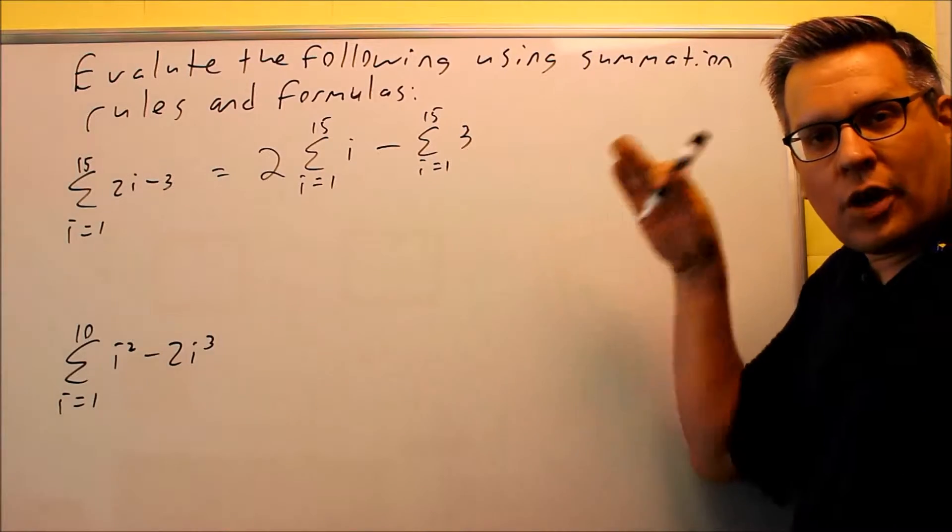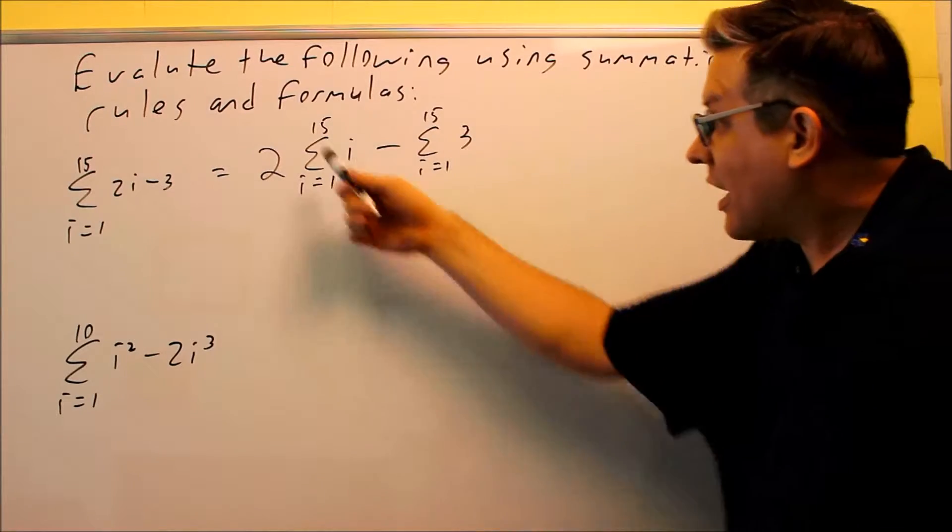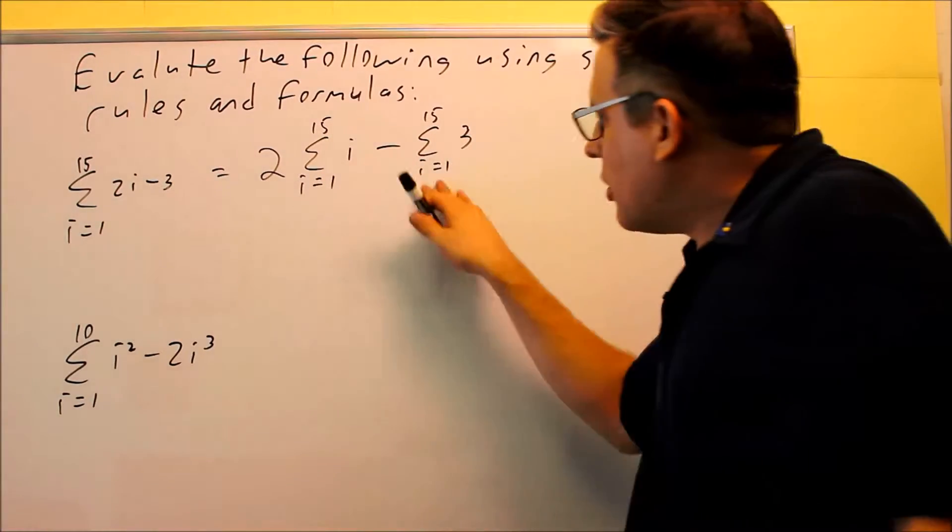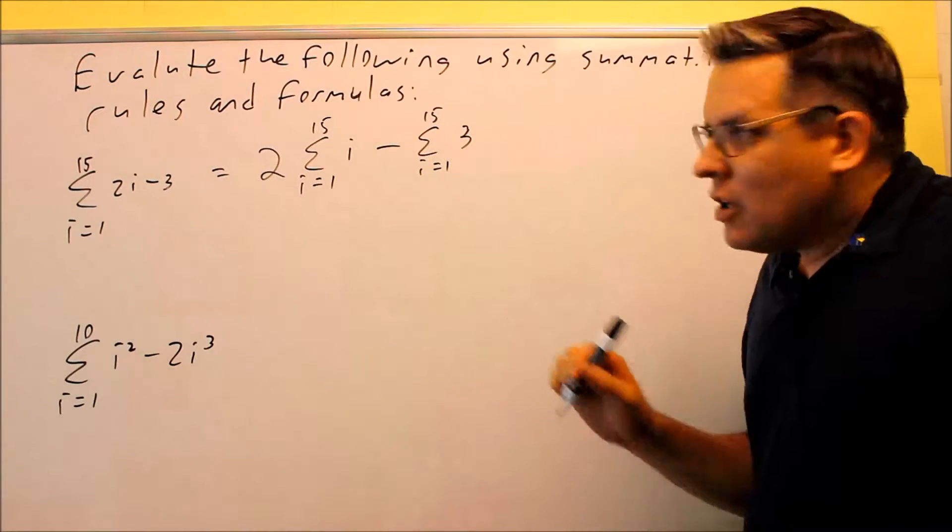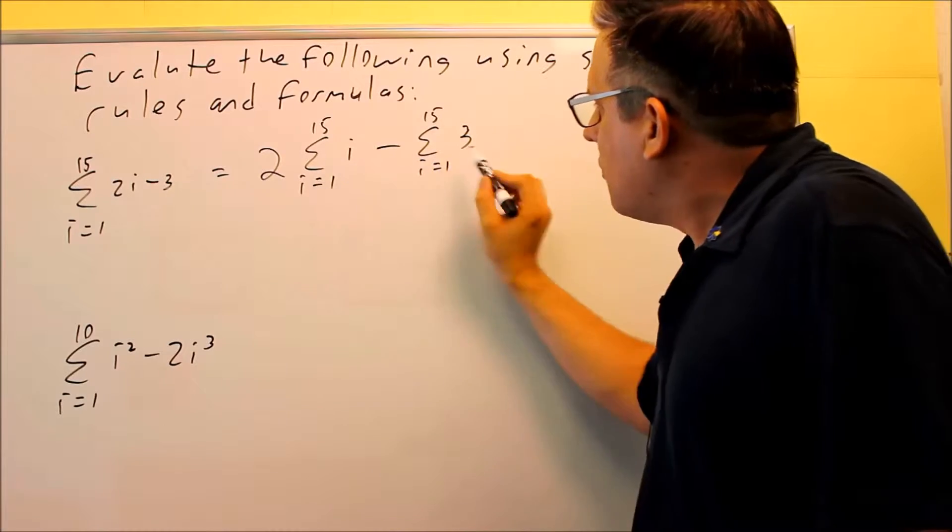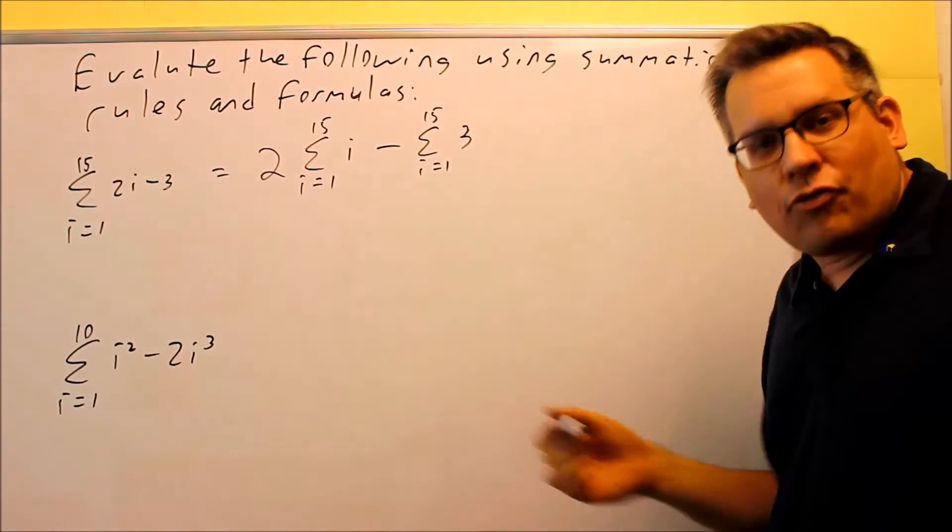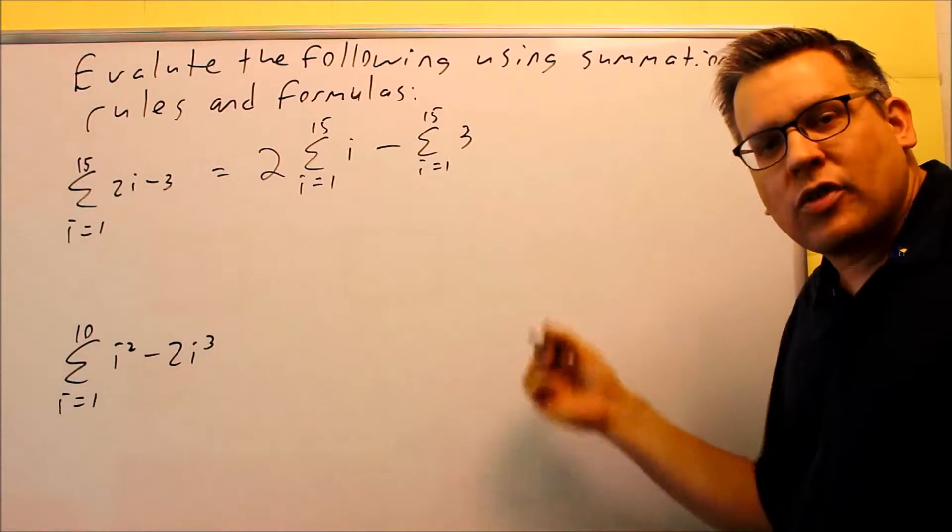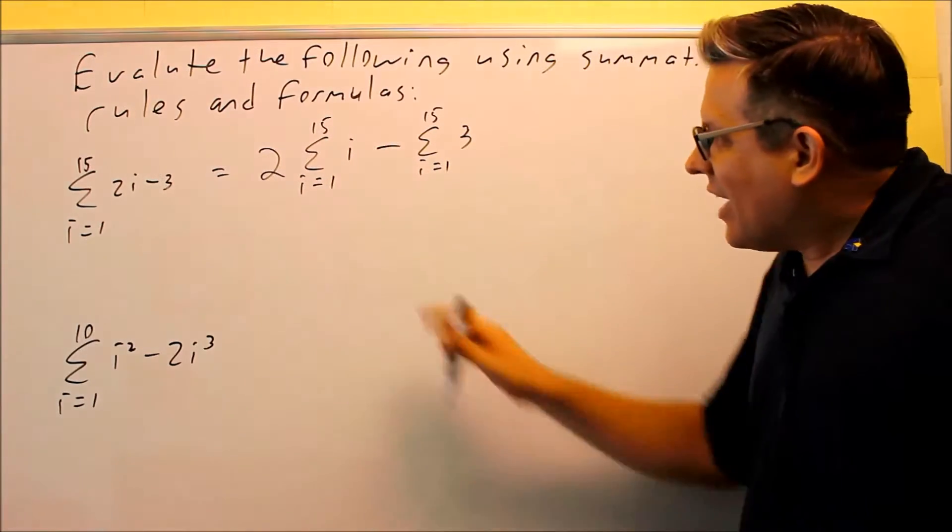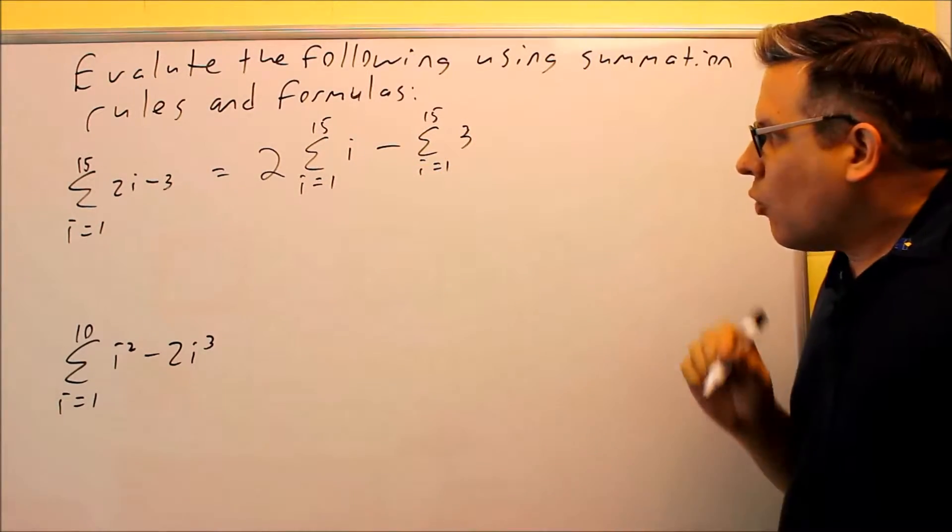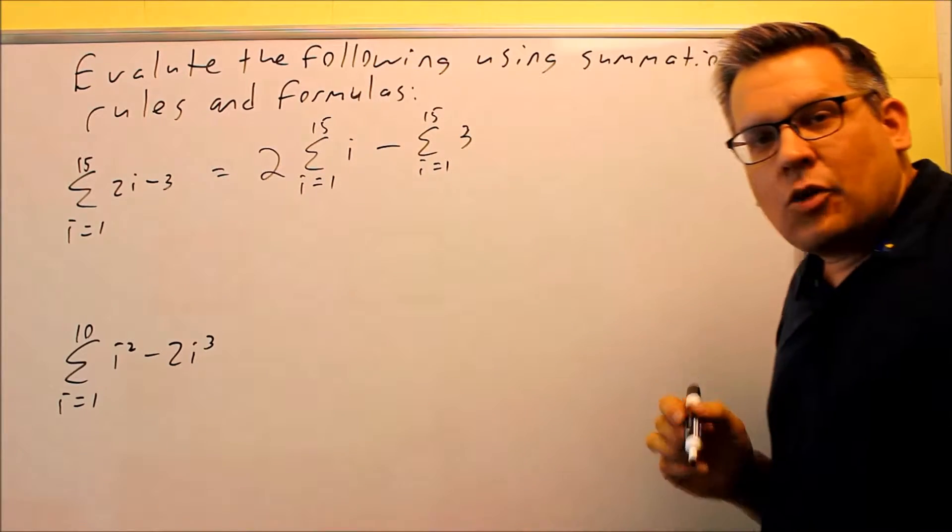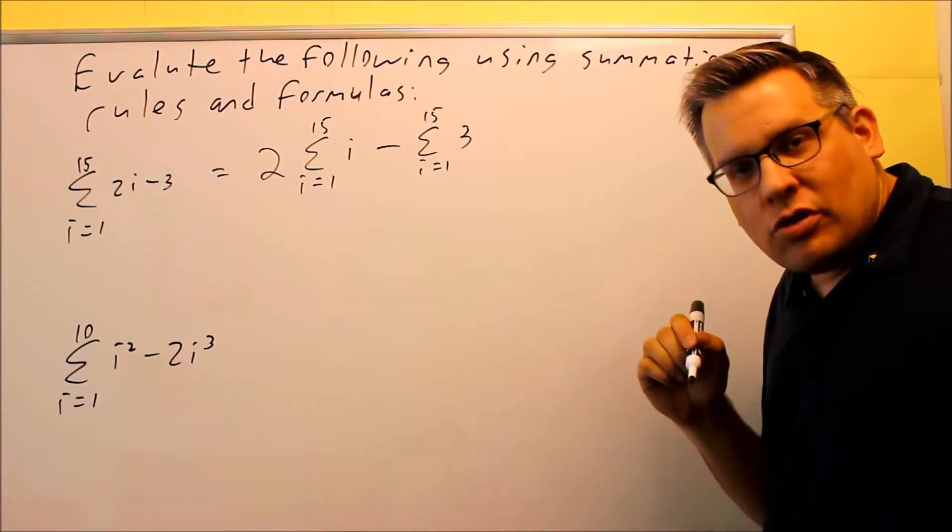So I've broken that up by using the summation rules, taking the constant on the outside and breaking it up into two separate summations. Now why do I want to do that? Because now I've isolated each of these two summations and I can use a different formula for each one. In the previous video we talked about the formula that you would use for this one, and if you have an i, what happens for that is it goes i equals 1 to n, it would be n times n plus 1 over 2 is the formula.